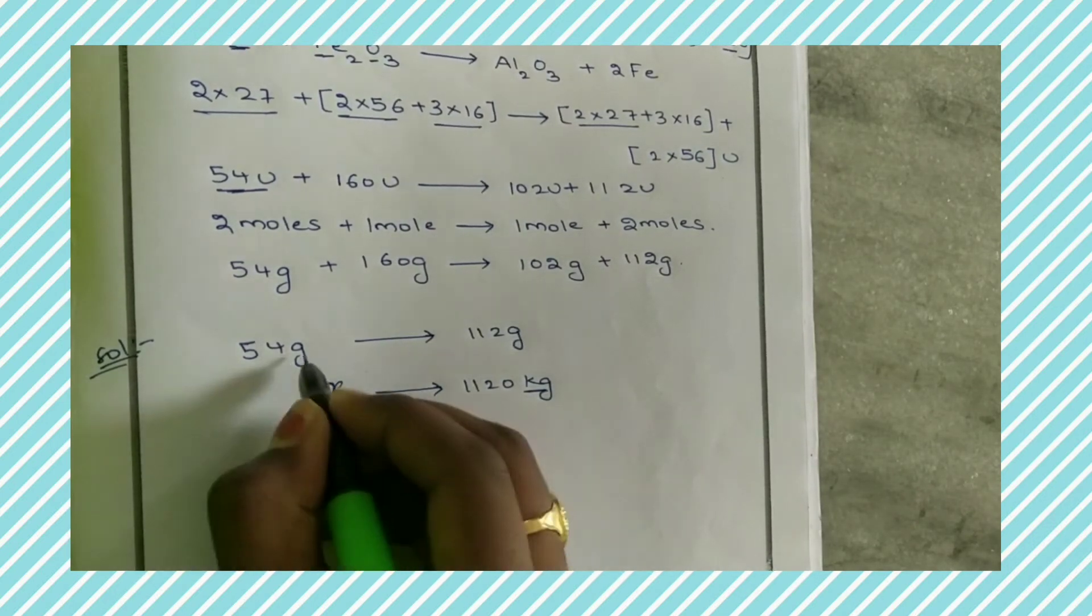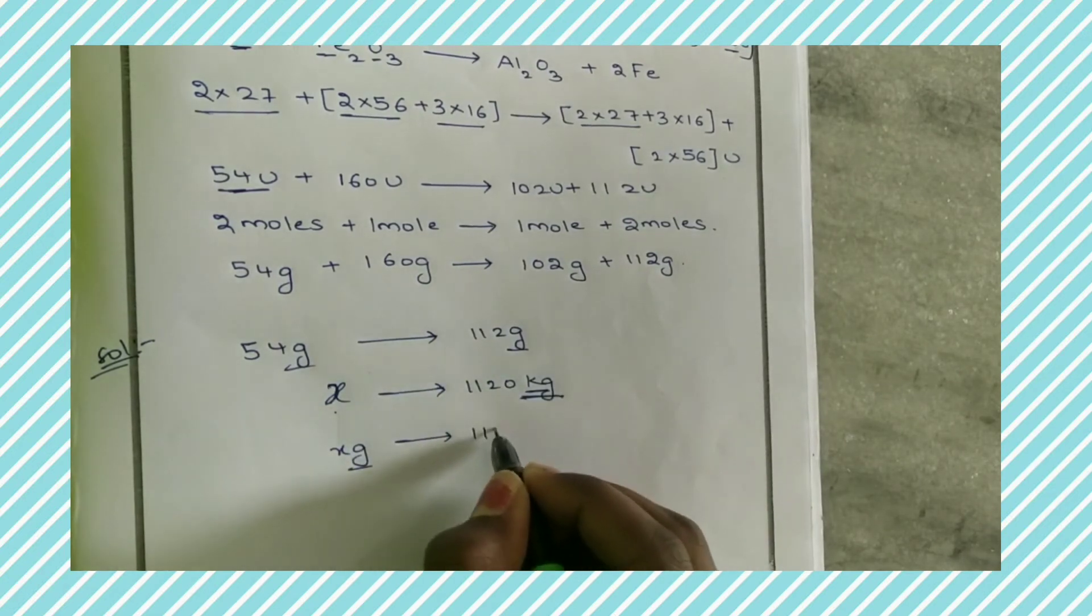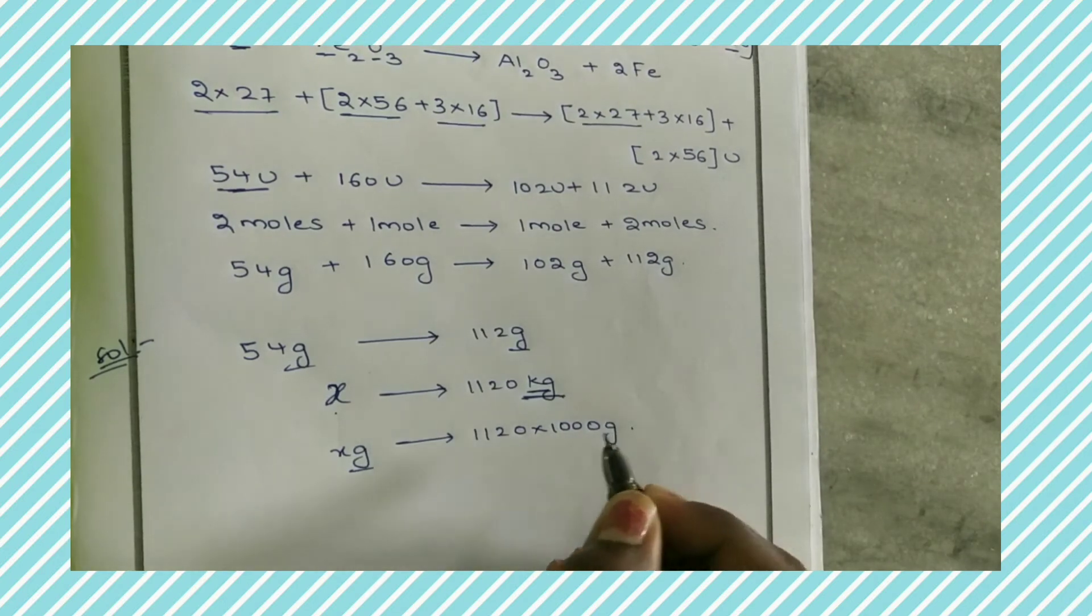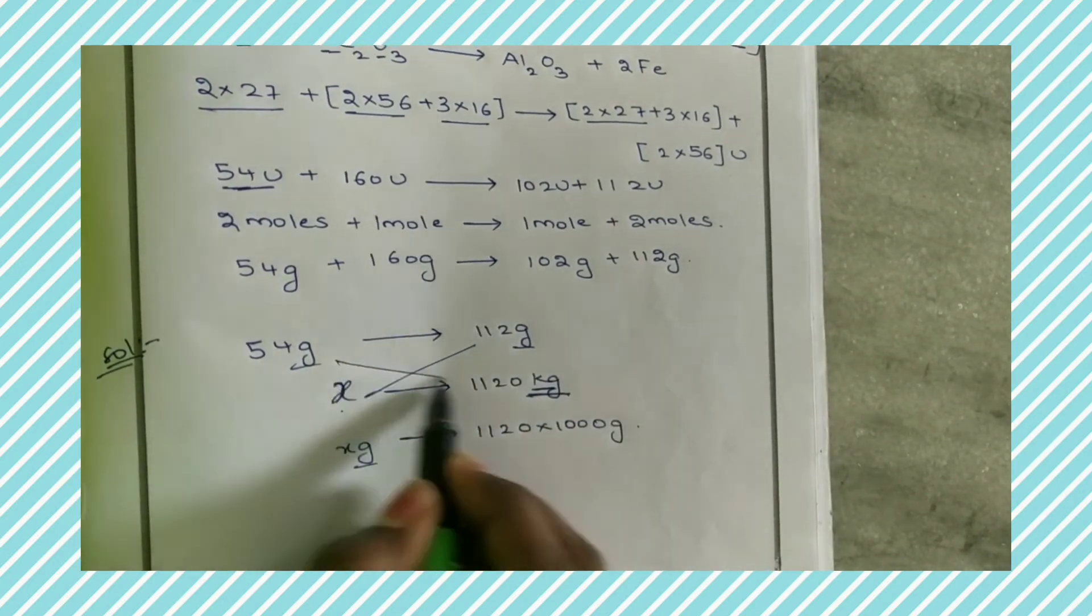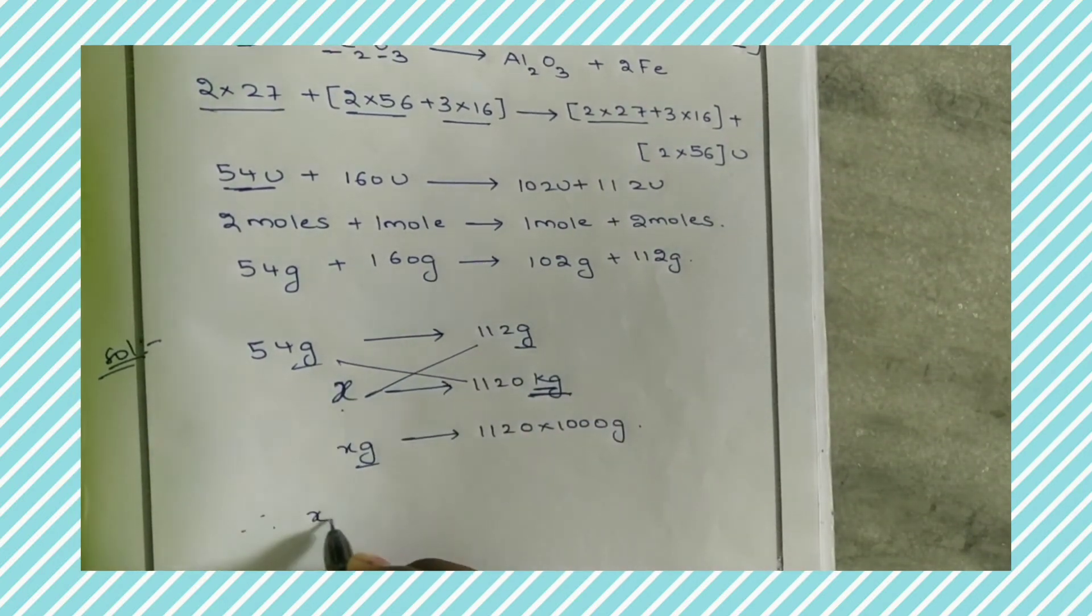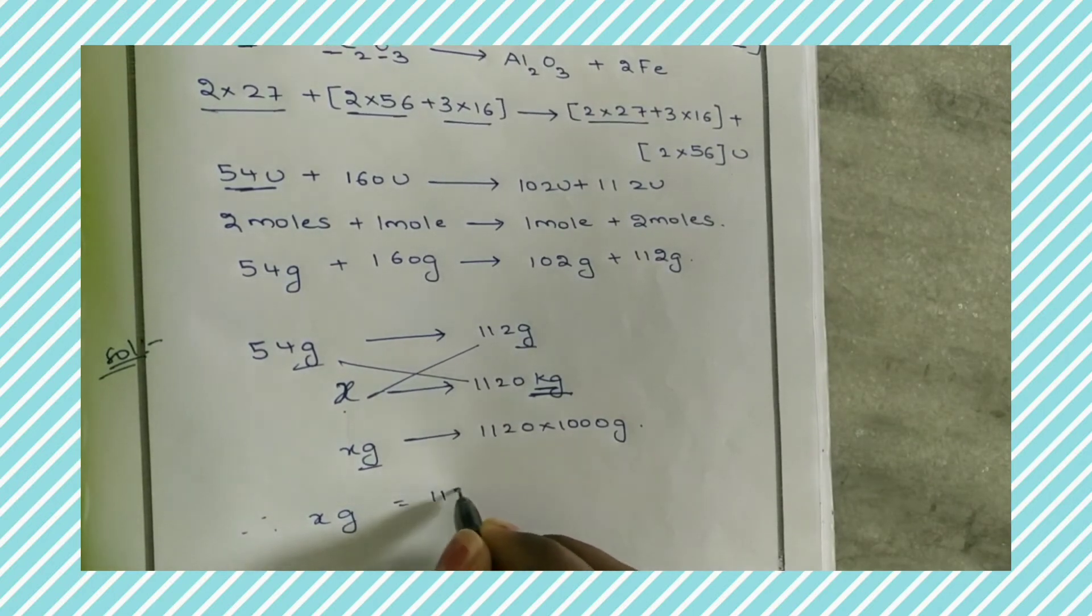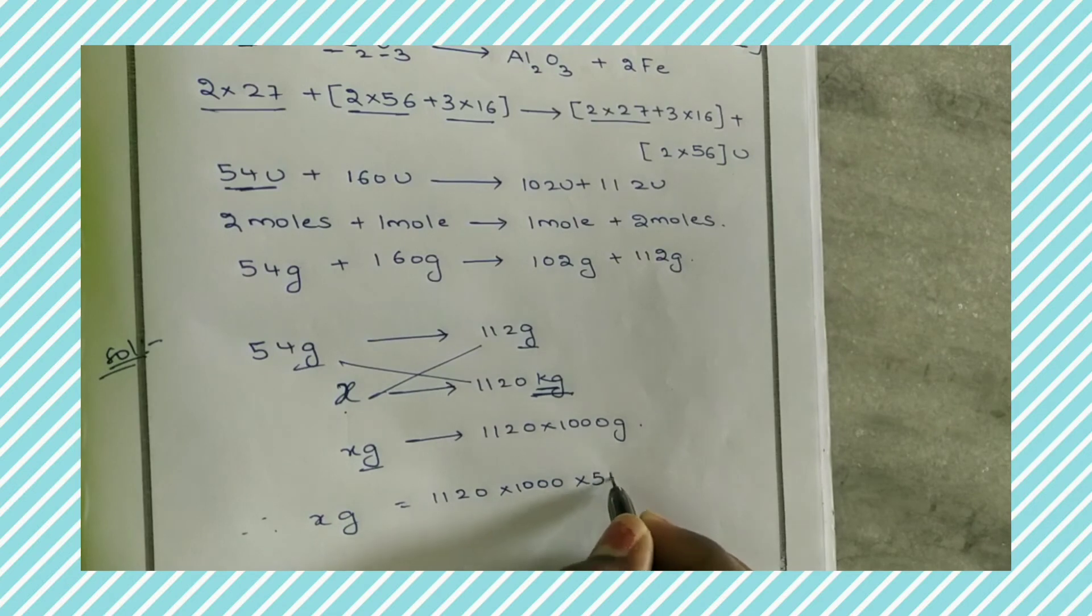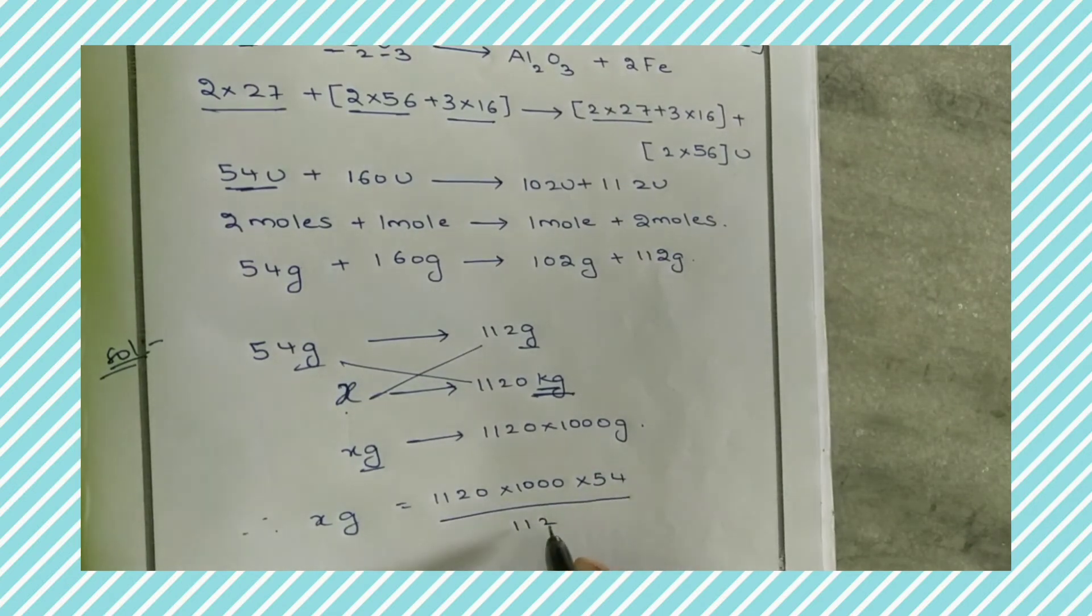Those three were in grams but only iron is in kilograms. So first we have to convert 1120 kilograms of iron into grams. So 1120 into 1000 grams, and we have to do cross multiplication. X grams equals 1120 into 1000 into 54 by 112.